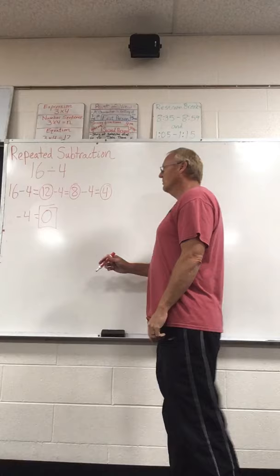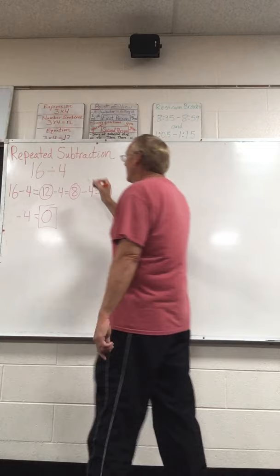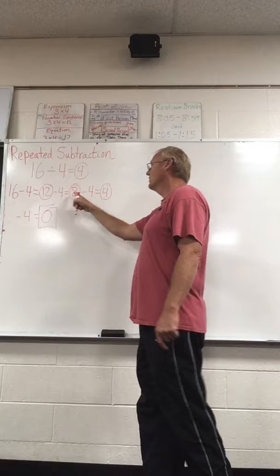The ones that you circled would be how many times you subtracted — so 1, 2, 3, 4. The number of times you subtracted would be your quotient. So 16 divided by 4 equals 4. We subtracted 1, 2, 3, 4 times.